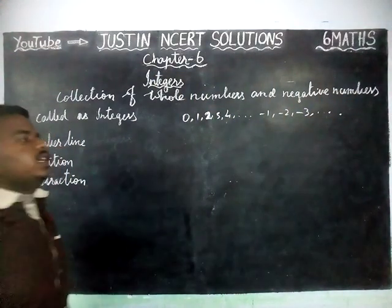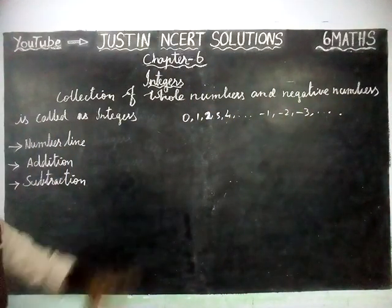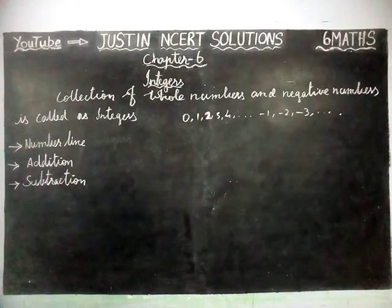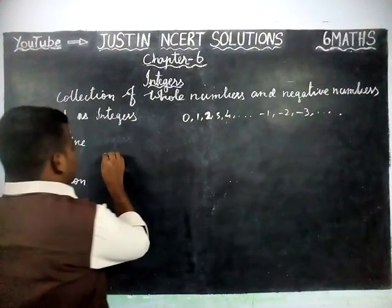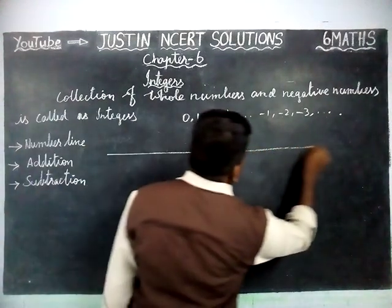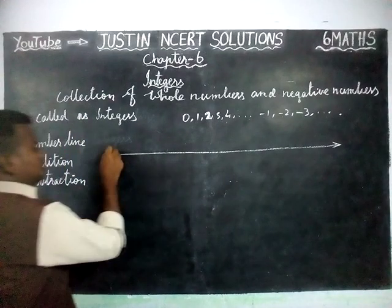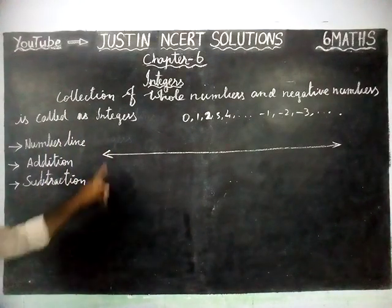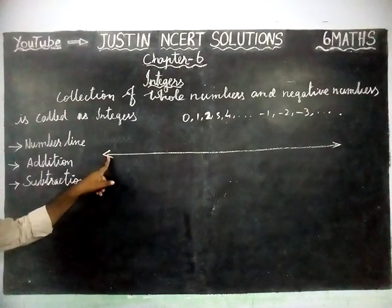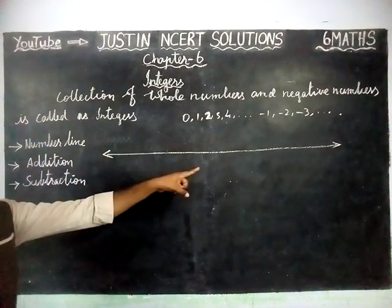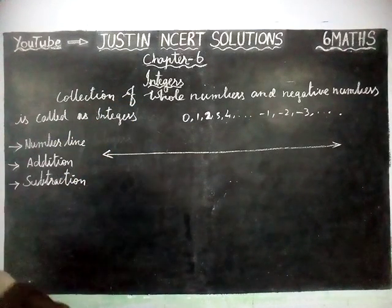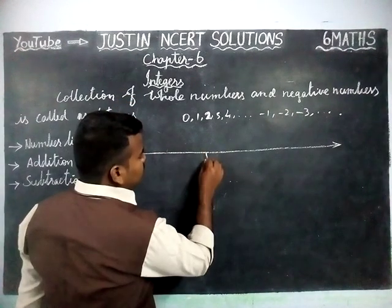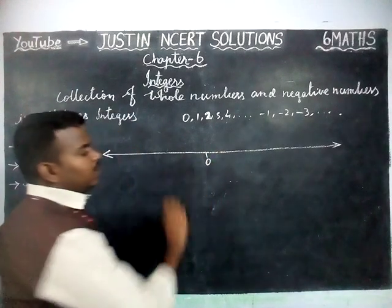They keep going up to infinity — there is no end. Now we are going to draw a number line for integers. This is the number line. A line means there is no end — it keeps on going. The starting origin point is 0.